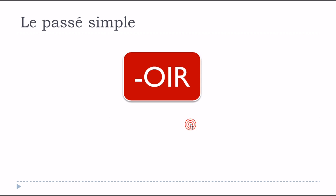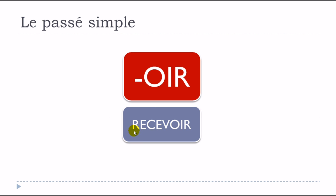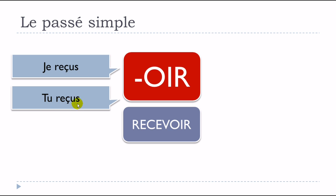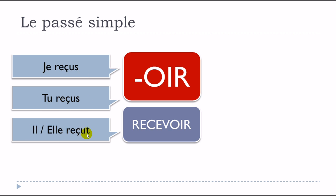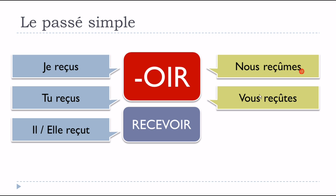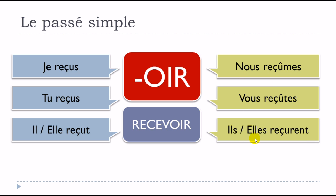Continuing with verbs ending with OIR — example: RECEVOIR, to receive. Je reçus, tu reçus, il reçut, elle reçut, nous reçûmes, vous reçûtes, ils reçurent, elles reçurent.